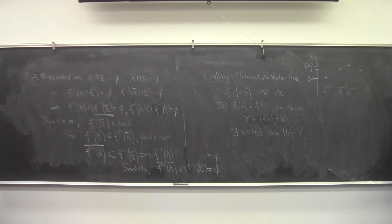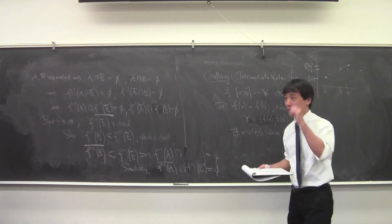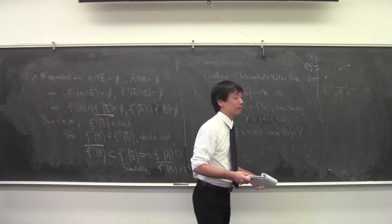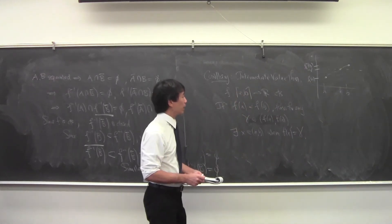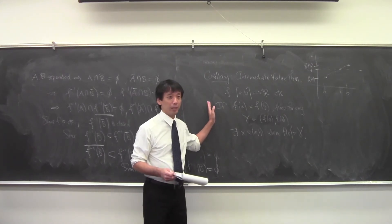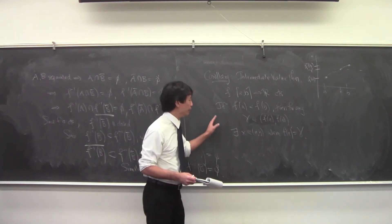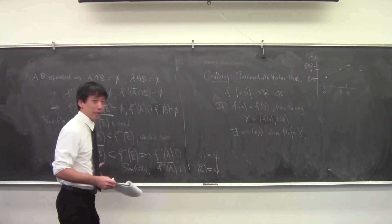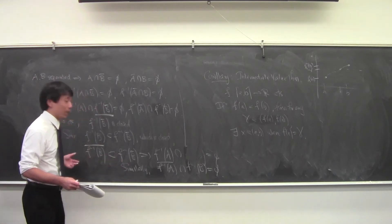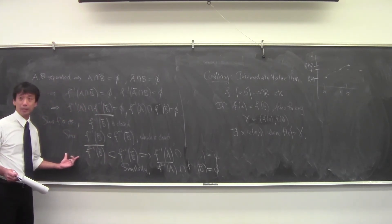If we were not in the real numbers but in the rational numbers, there could be holes and we might not even touch the line. So it's not completely obvious — it actually relies on the least upper bound property, which is what we used to prove the fact about connected sets in the real line.